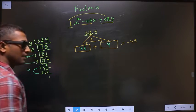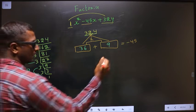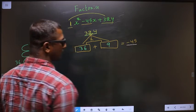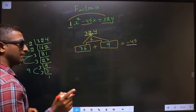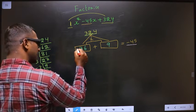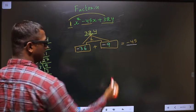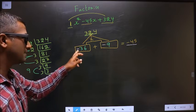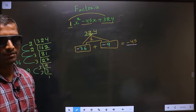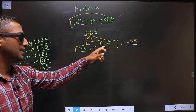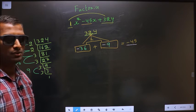Adjust the signs. Here I should get minus 45. That could only happen if I place minus here and also here. Minus 36 minus 9 is minus 45. Minus 36 into minus 9 is plus 324.